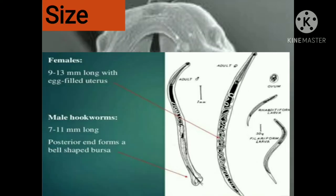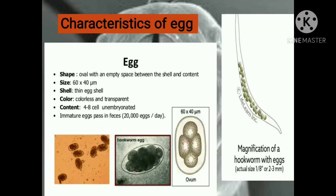The size of the females are 9 to 13 millimeters long with egg-filled uterus. While the male hookworms are 7 to 11 millimeters long with a posterior that forms a bell-shaped bursa. The eggs are oval with an empty space between the shell and content, 60 by 40 micrometers. They have a thin egg shell, colorless and transparent. They contain 4 to 8 cells and are embryonated. The immature eggs passed in feces are approximately 20,000 eggs per day.